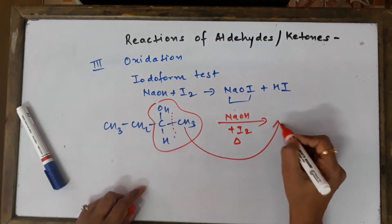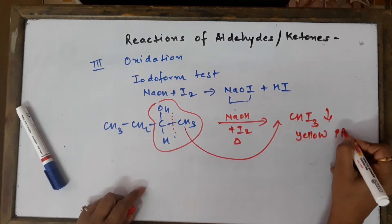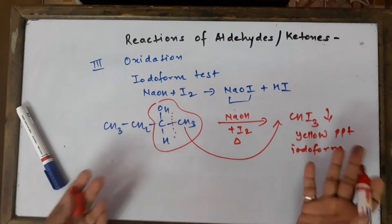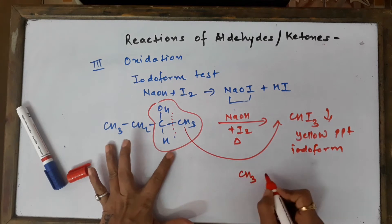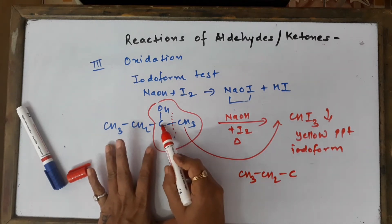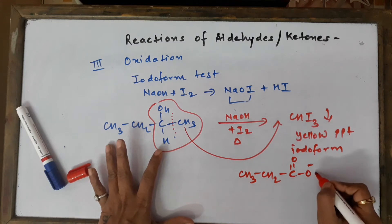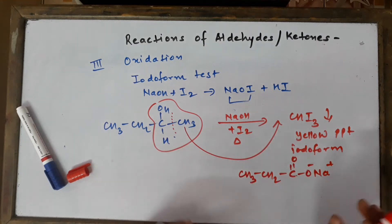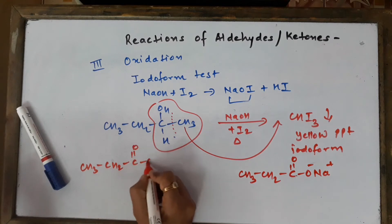The yellow precipitate formed is called iodoform, CHI₃. The remaining fragment — CH₃CH₂C — gets converted into an acid, but since alkali is present in the test tube, we write the sodium salt: CH₃CH₂COO⁻Na⁺ (sodium propanoate). So the products from this alcohol are iodoform plus the sodium salt of the carboxylic acid.